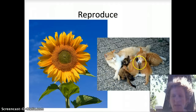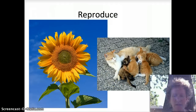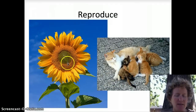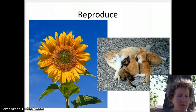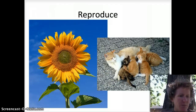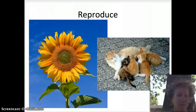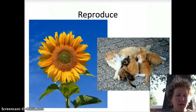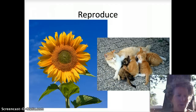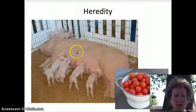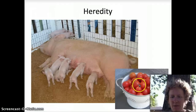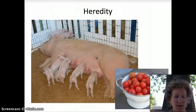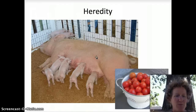Living things reproduce — cats have kittens, they make more of themselves. Sunflowers and other plants make seeds, that's how they make baby plants. Bacteria also reproduce, and fungi reproduce with spores. All organisms make more of themselves. And heredity means you look like your parents — whether you're a tomato or a piglet, you're going to look like the organisms whose offspring you are.